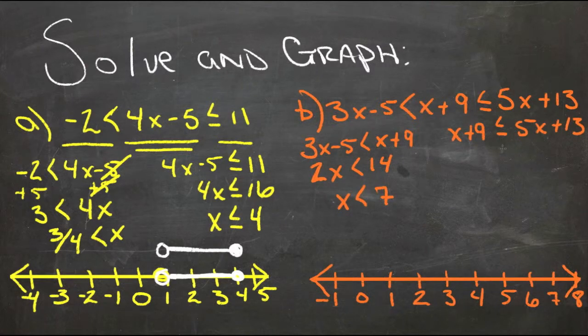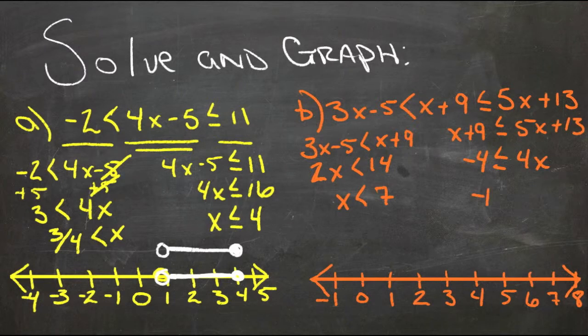And then over here, we have more x's on the right-hand side, so when we subtract x from both sides, we'll also subtract 13 from both sides, and we'll get negative 4 is less than or equal to 4x. Divide both sides by 4, and we get negative 1 is less than or equal to x. So x is greater than or equal to negative 1, but less than 7.